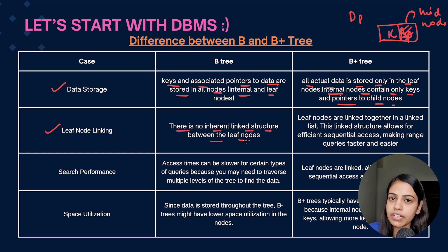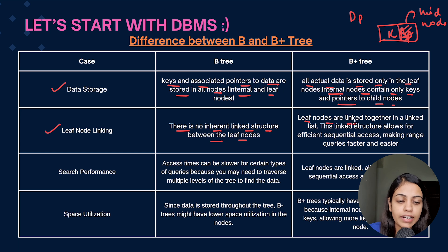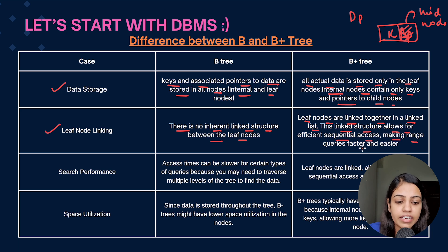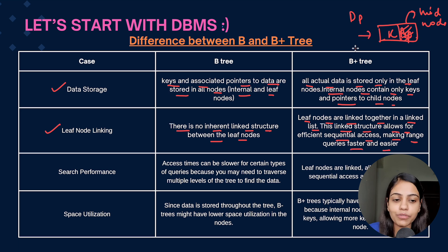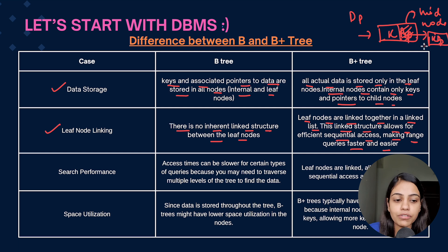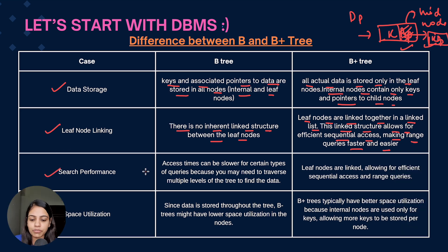The second difference is leaf node linking. In B-trees there is no linked structure between the leaf nodes. In B+ trees, leaf nodes are linked together in a linked list manner. This linked list structure allows for efficient sequential access, making range queries faster and easier. Since all data is present in the leaf nodes and all leaf nodes are interconnected, searching would be very fast.